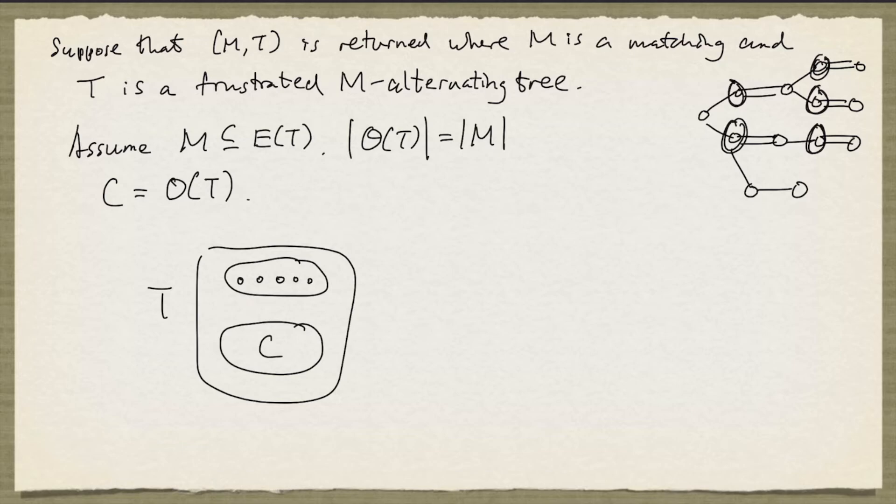Because T is frustrated, each node in the even set has to be joined to a node in C. No two nodes in the even set are joined by an edge.